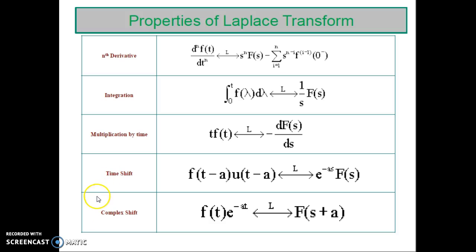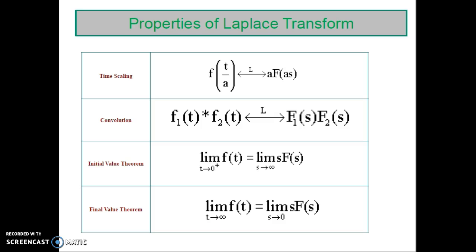The next property is the complex shift property. f of t into e raised to minus at results in f of s plus a. Next is the time scaling property: f of t upon a results in a into f of as in the s domain.